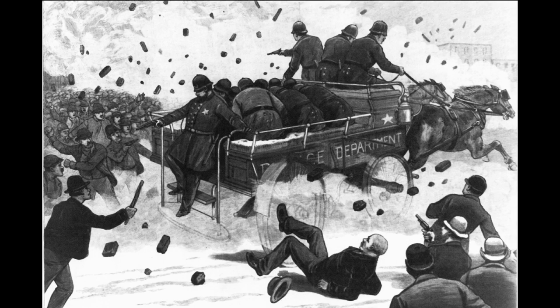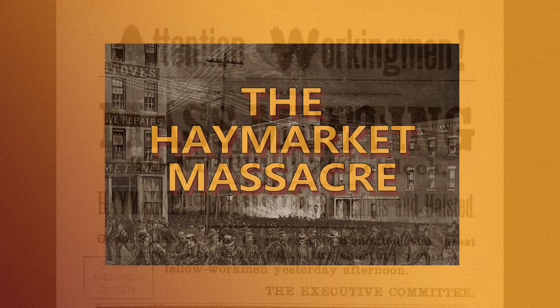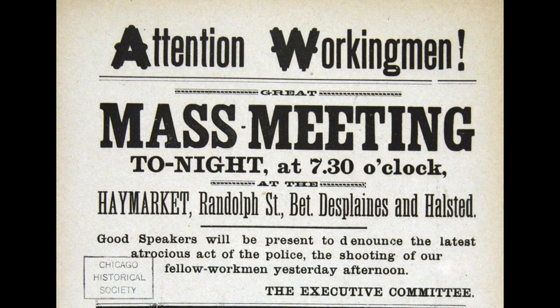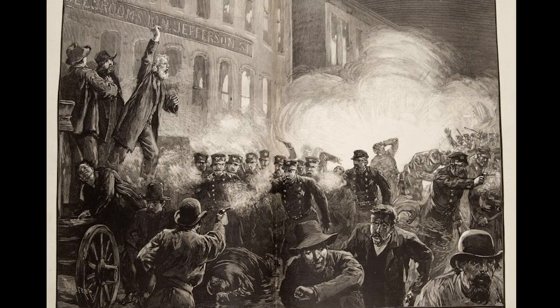In the clash that followed, the officers opened fire on the crowd, numerous strikers were wounded, and at least one was killed. Local radicals held a rally at Haymarket Square the following day in support of those shot at McCormick. The event took place peacefully until police charged in, and an unknown assailant threw a bomb into the middle of their formation.